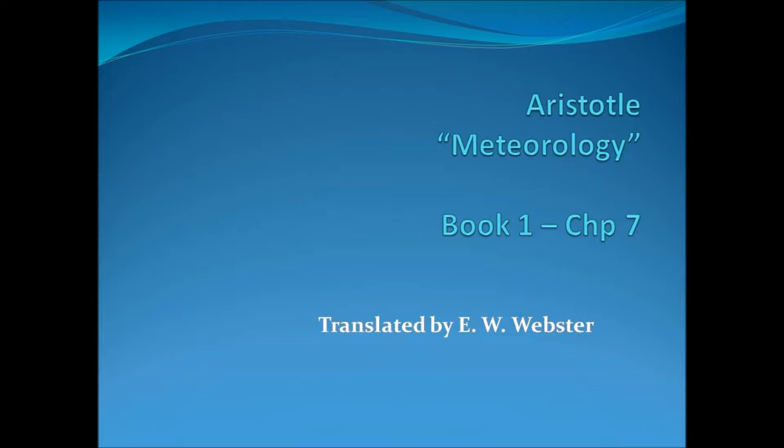When the matter begins to gather in the lower region independently, the comet appears by itself. But when the exhalation is constituted by one of the fixed stars or the planets, owing to their motion, one of them becomes a comet.